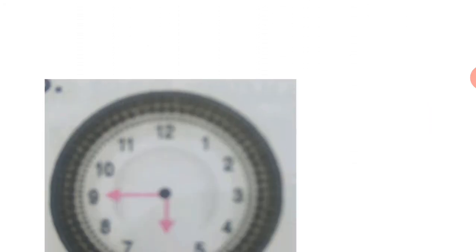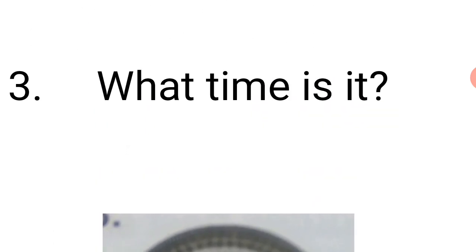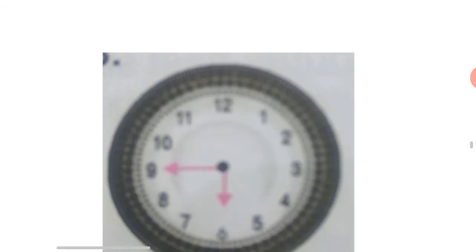Let's go to the third example. In the third example, we are asked: what time is it? Look at the wall clock. The long hand is pointing to nine, while the short hand is pointing to six. So we say it's quarter to six.